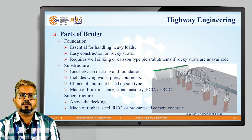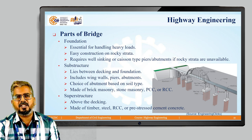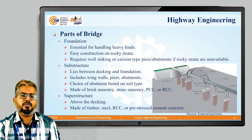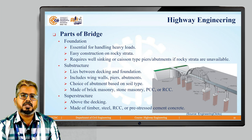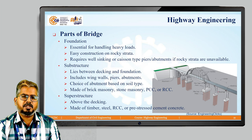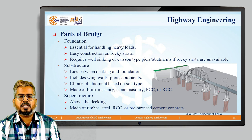The various parts of a bridge are also shown in the figure. The foundation is the bottom-most part of the bridge, essential for handling heavy loads, and it is easy to construct on rocky strata. It requires well sinking or caisson-type piers or abutments if rock strata are unavailable. Above that comes the substructure, which lies between the decking and the foundation. It includes wing walls, piers, and abutments. The substructure is usually made up of brick masonry, stone masonry, PCC, or RCC. The topmost part is the superstructure, which comes above the decking area and is usually made up of timber, steel, RCC, or pre-stressed cement concrete.